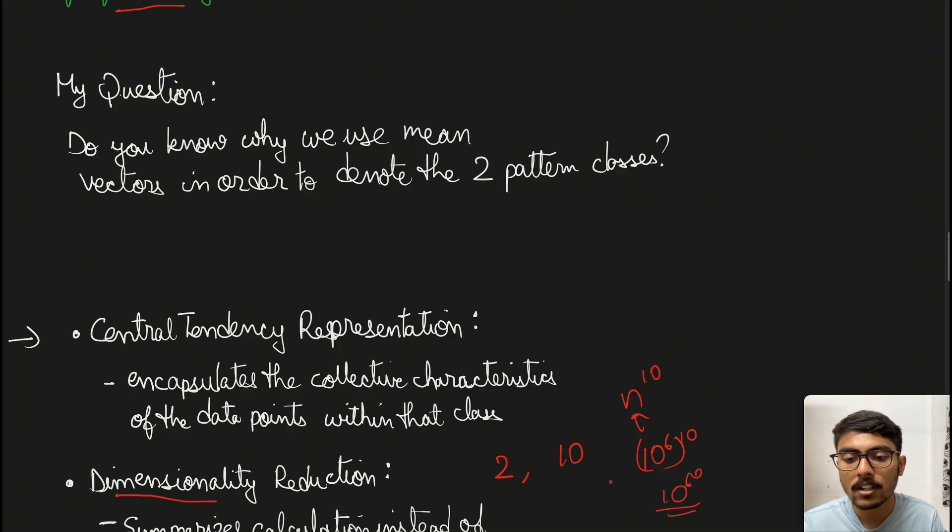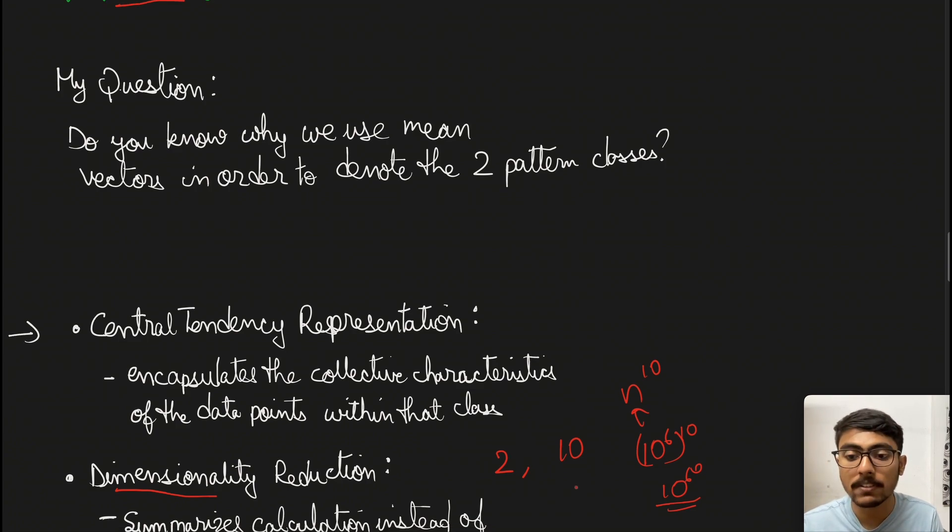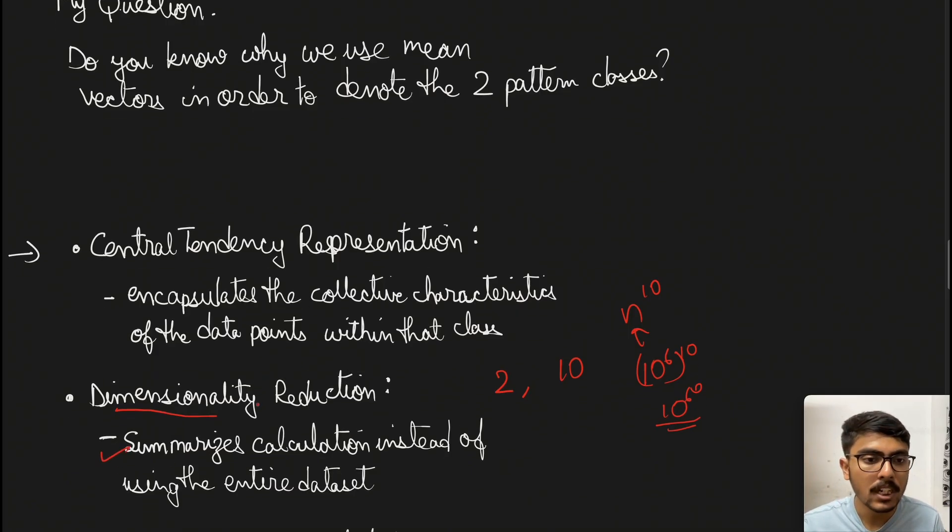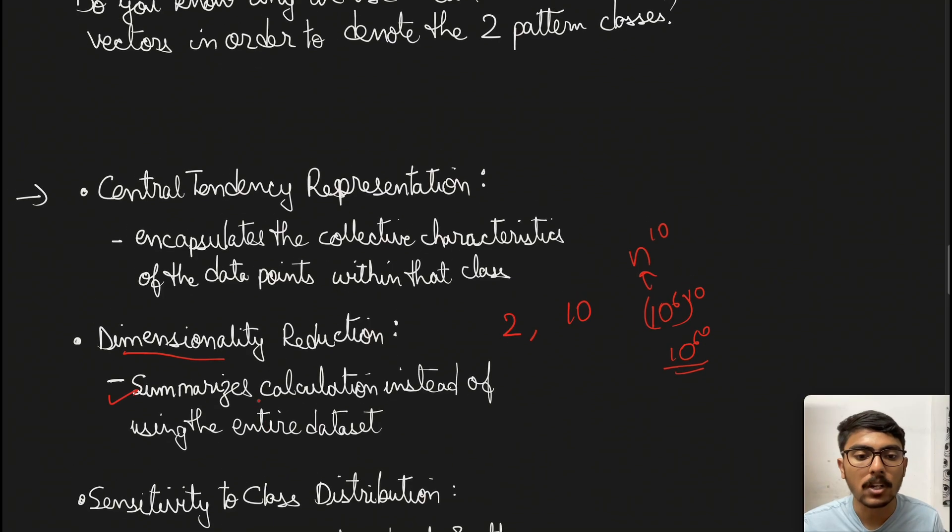You can see the huge number we'd be dealing with if not using the mean vector. It's not computationally feasible in polynomial time. That's why we use mean vectors - we summarize the calculation instead of using the entire dataset.